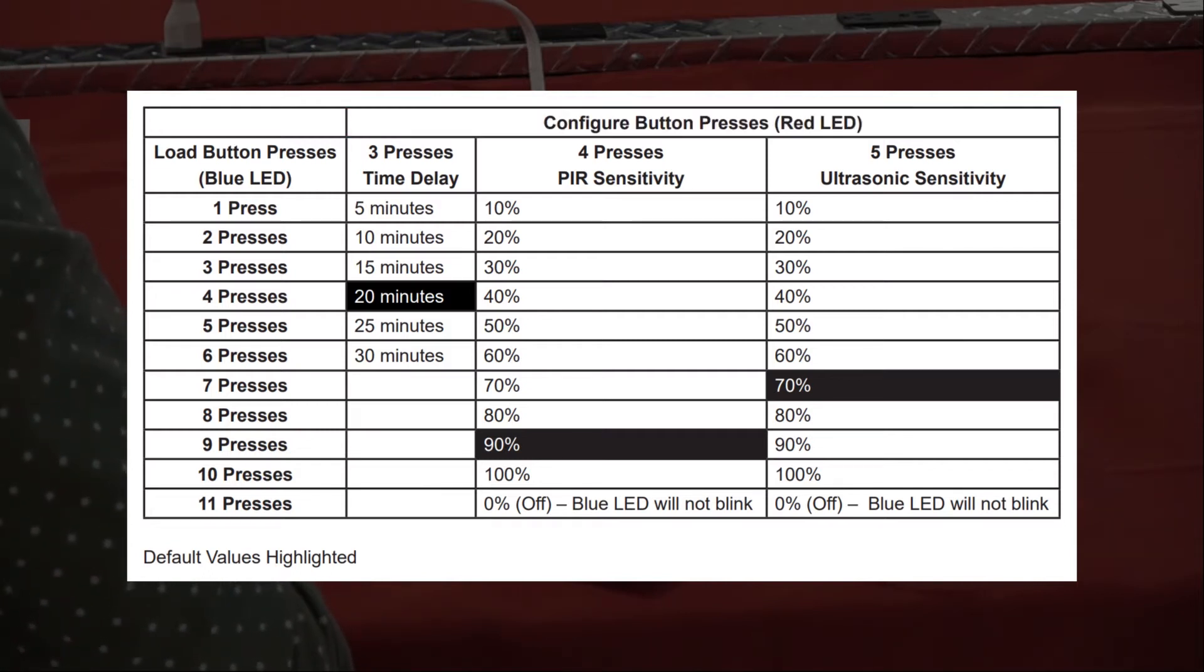After selecting a parameter, you can then set its value using the load button. The chart also shows the number of presses corresponding with each available value. Note that more values are available in our programming tools. Finally, exiting the parameter mode is performed by pressing the configure button again the same number of times used to enter the mode.